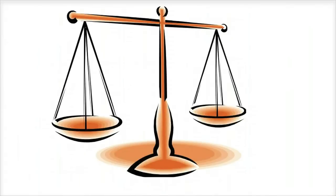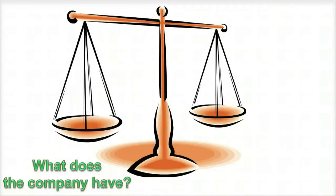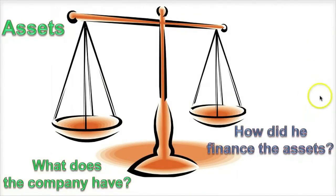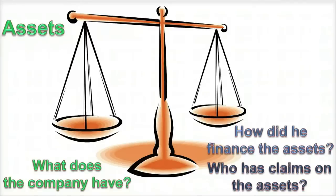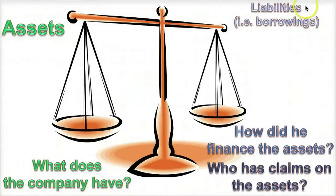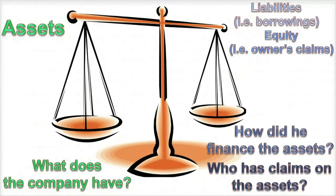That brings up the balance sheet equation. What a company has should be equal to the claims against what it has. What it has are known as assets. On the other side of the equation, we need to describe how they financed those assets — in other words, who has claims on those assets. The answer is lenders and creditors, summarized on the balance sheet as liabilities, also known as borrowings, and equity, which are the owner's claims against those assets.